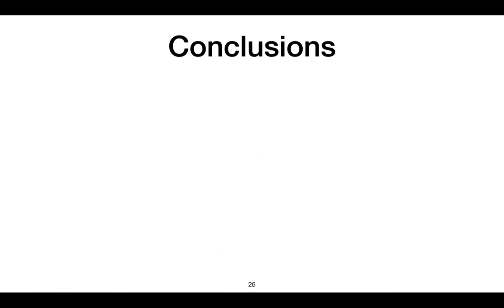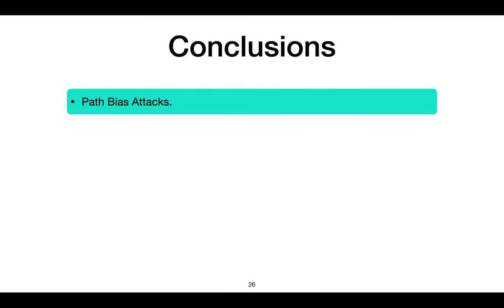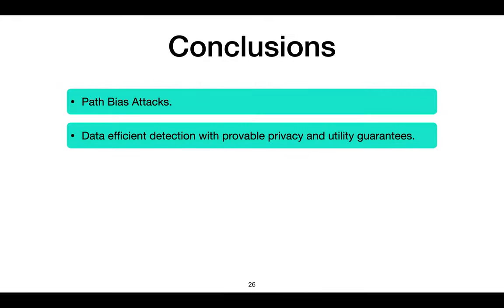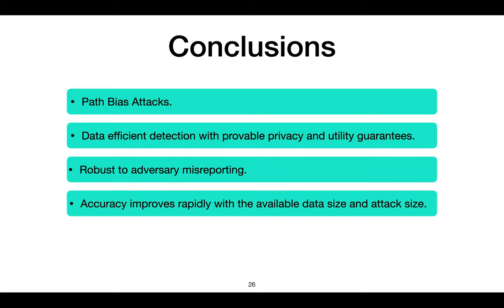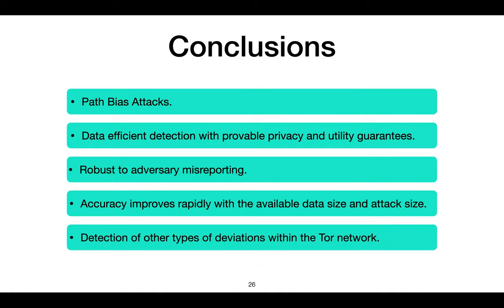To conclude, in this work we have considered path bias attacks in Tor. We provided a data-efficient detection algorithm with provable privacy and utility guarantees, which is robust to adversary misreporting. We saw that accuracy improves rapidly with the available data size and the size of the attack. Finally, our scheme could also be used to detect other types of deviations within the Tor network and is not limited to detecting path bias attacks alone. Thank you for listening.